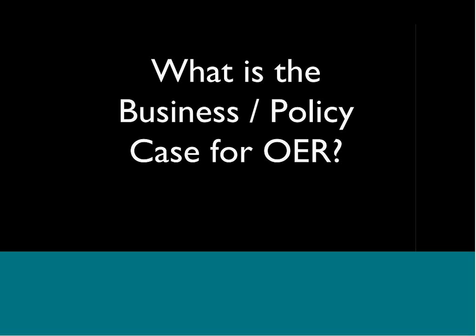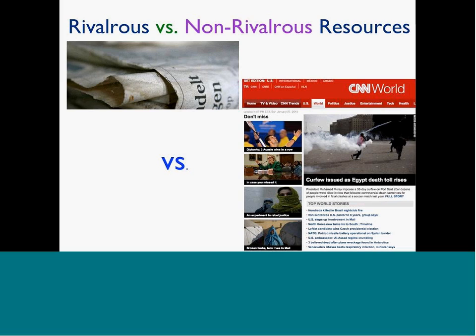Talking about policy and the business case really comes down to the affordances of digital things. One phrase that gets thrown around is 'rivalrous versus non-rivalrous' resources. Rivalrous resources — if I have it, you can't simultaneously use it. A paper version of a newspaper or a book in your library is a great example: if one copy is checked out, nobody else can use it, which is why libraries have limits on checkout periods. Digital things don't have that hindrance.